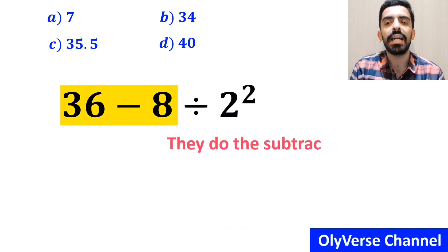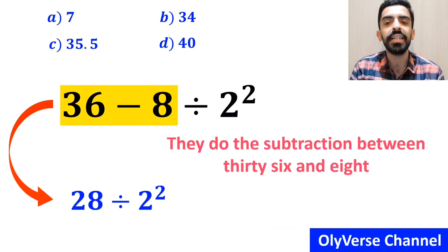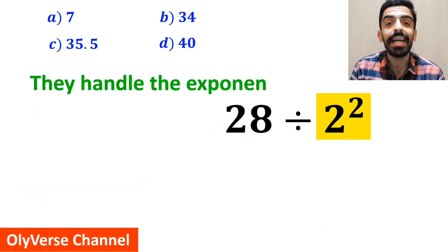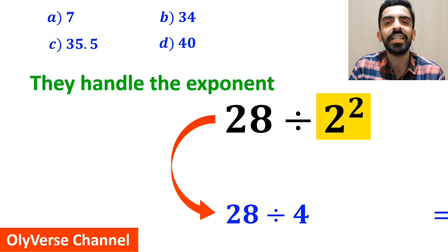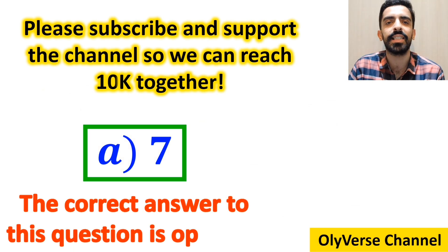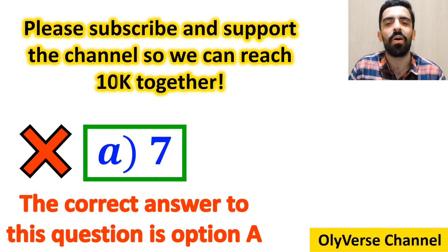Next, they do the subtraction between 36 and 8 and simplify this expression to 28 divided by 2 squared. In the final step, they handle the exponent and write this expression as 28 divided by 4, which ultimately gives them the answer 7. And they conclude that option A is the correct answer to this question. However, this answer is absolutely wrong.